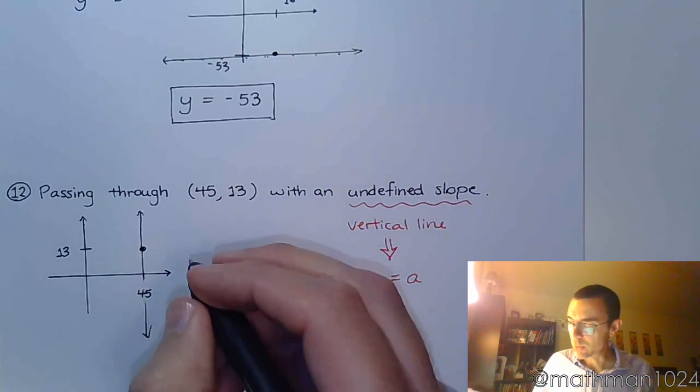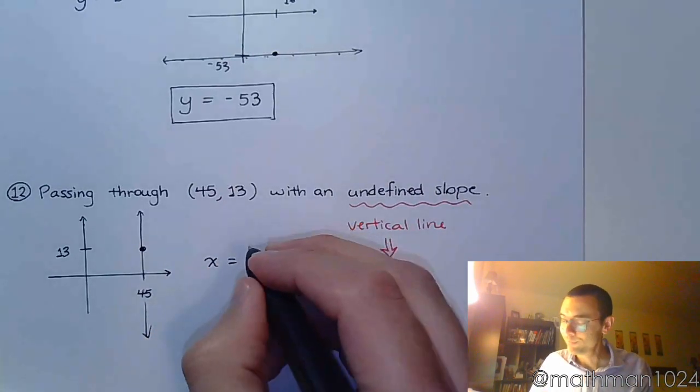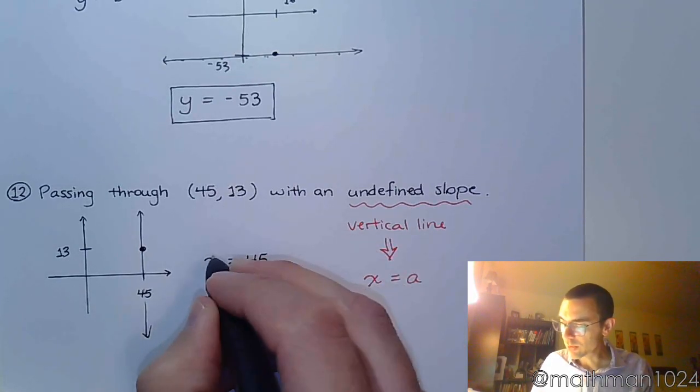And we know that the equation is supposed to be x equals. Well, what does x equal for every single point on this line? You guessed it, x equals 45.